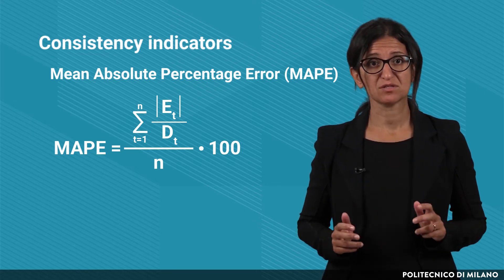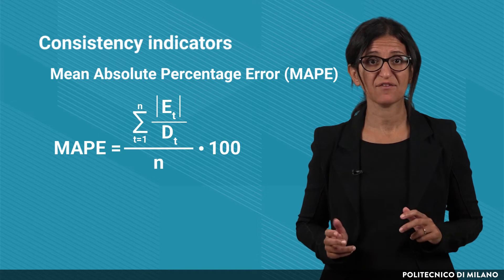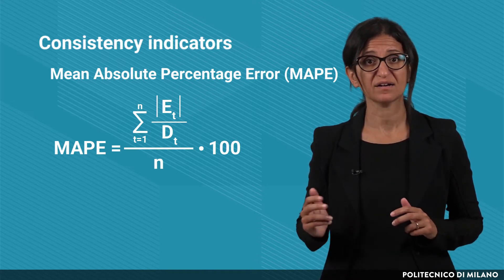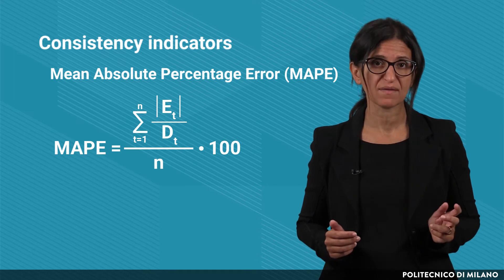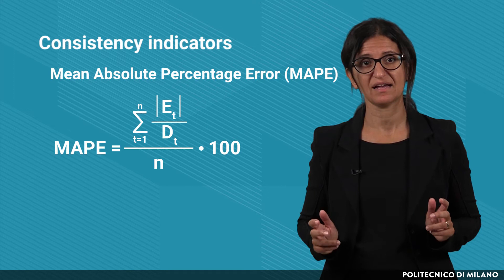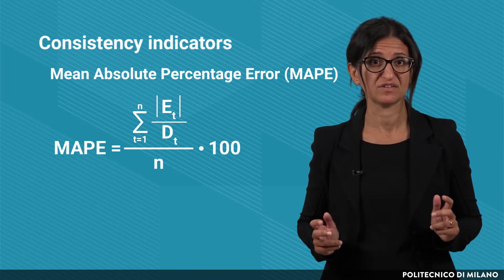Similar to the mean absolute deviation, we do not have any indication about the type of error, that is, if we are underestimating or overestimating the demand, but it is useful to better understand the relative magnitude of the errors.